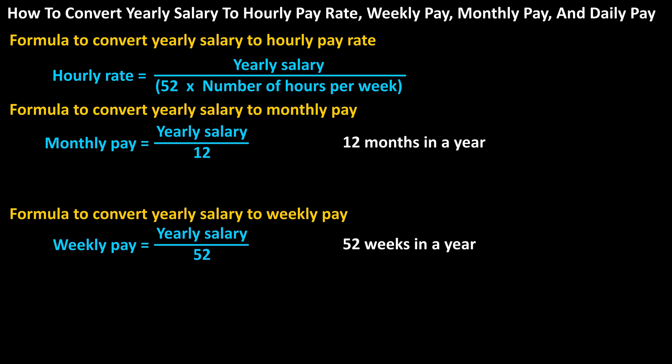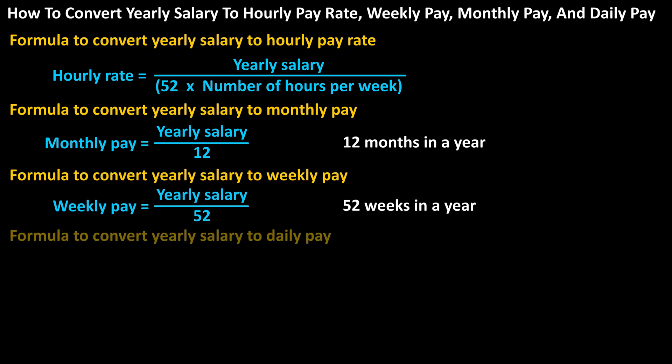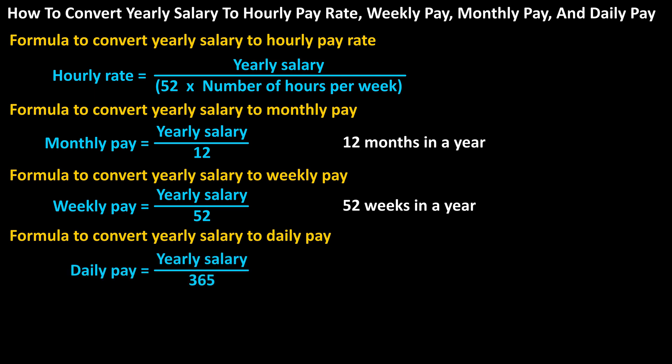And now for yearly salary to daily pay. The formula to convert yearly salary to daily pay is: daily pay equals yearly salary divided by 365 days in a year. During a leap year there are 366 days, so you can modify the formula if you need to.